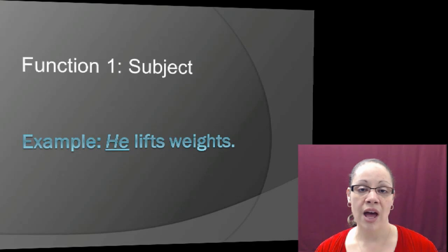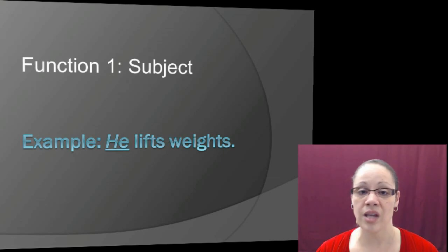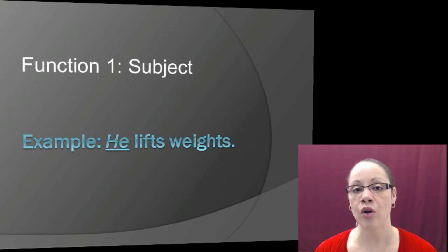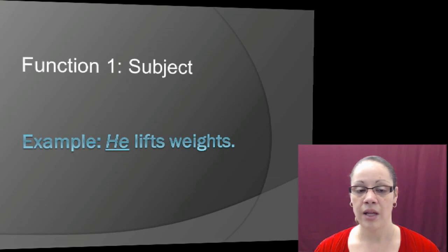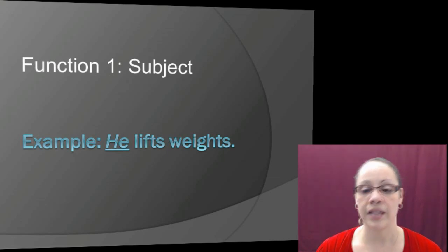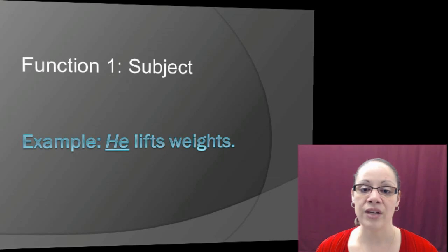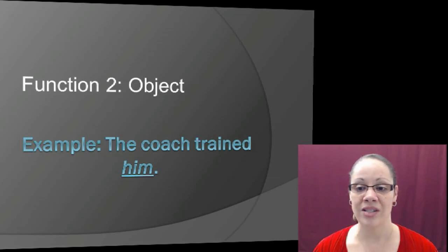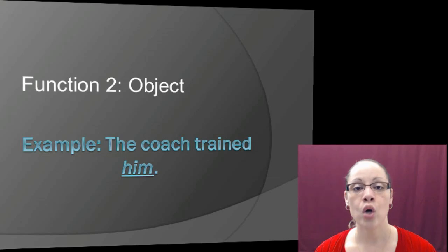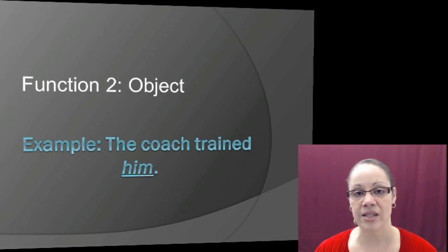The first function of a pronoun is acting as the subject. Using the same examples as before but replacing the name Ted with a pronoun: 'He lifts weights' — 'lifts' is the verb, who lifts? He. So 'he' is the subject, taking the place of Ted. The second function is acting as the object: 'The coach trained him.' Who did the coach train? Him — so 'him' is the object pronoun replacing Ted.